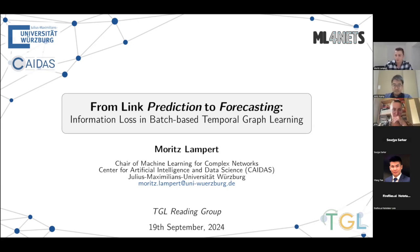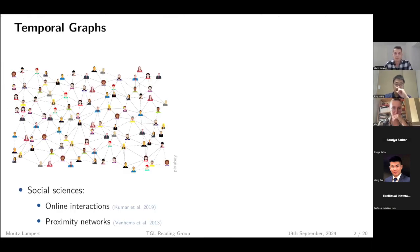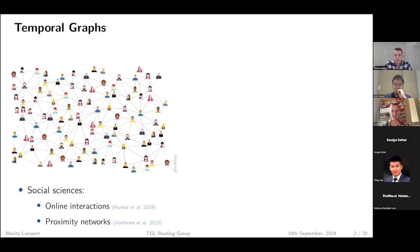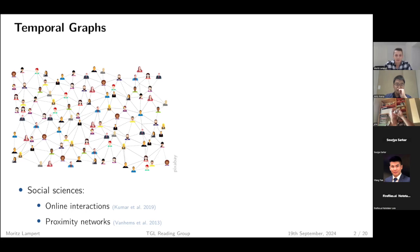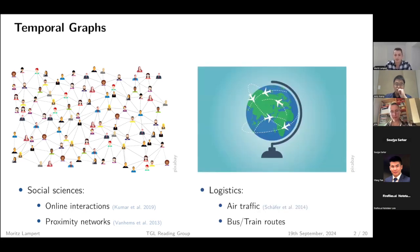A quick motivation: in modern data collection, more and more data is collected everywhere, which is one of the driving factors in recent AI success. For graphs or networks, this means we can not only gather data for graphs scaling up to millions or billions of nodes, but also collect timestamps of interactions in specific systems. Examples include social sciences, such as online interactions, music listening history of users, proximity networks familiar from contact tracing apps, and logistics like air traffic networks or train and bus routes.